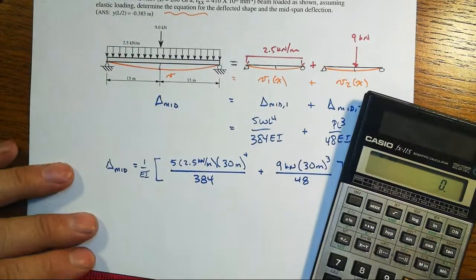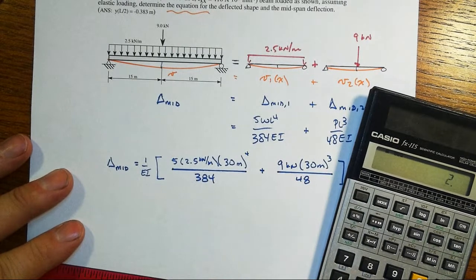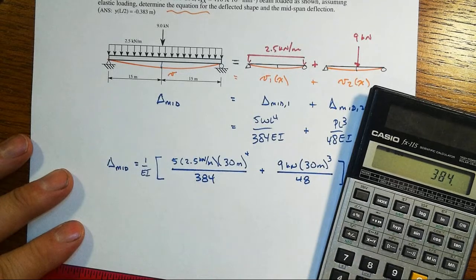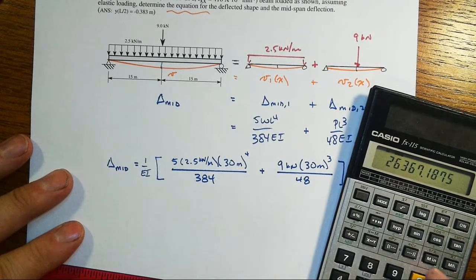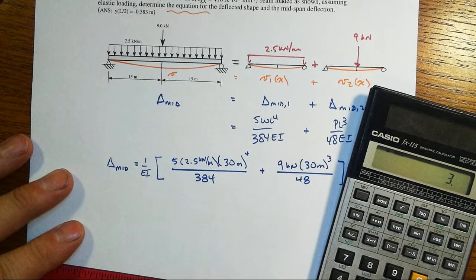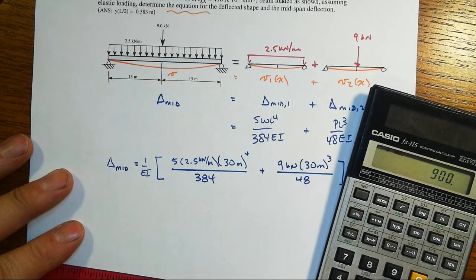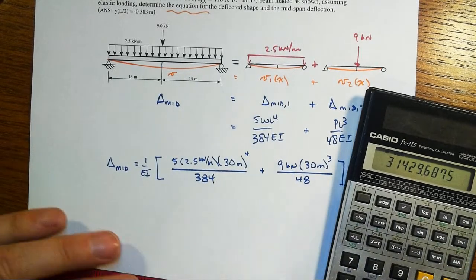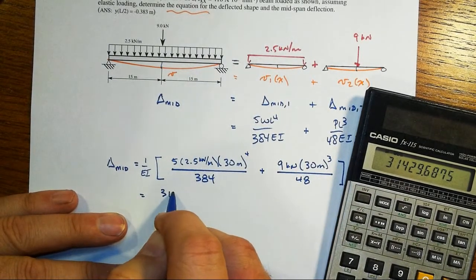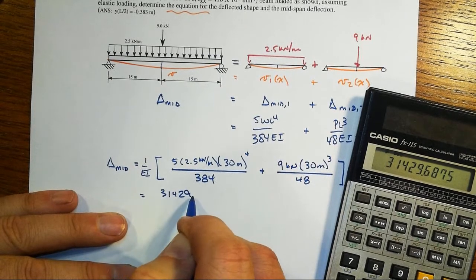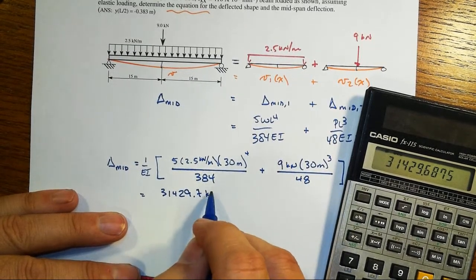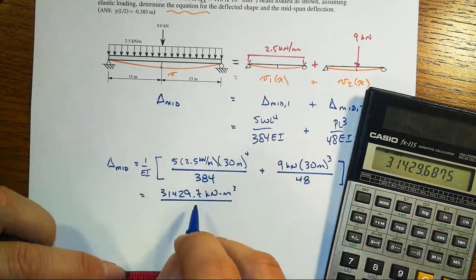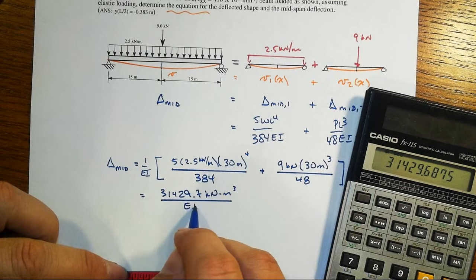9 kN times that length, 30 meters cubed over 48. And take note here, our units are going to be kN·m³ in the second one, and we get kN per meter times meters to the fourth. So we'll end up with one of the meters going away. We'll have kN·m³. 5 times 2.5 times 30 to the fourth power, divided by 384, plus 9 times 30 times 900, divided by 48. And we get a total of 31429.7 kN·m³ divided by EI.